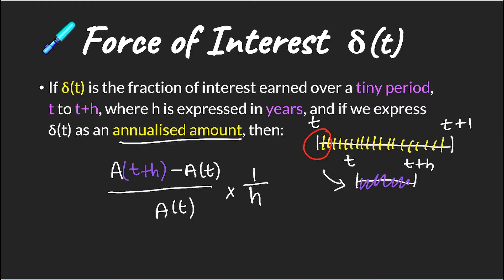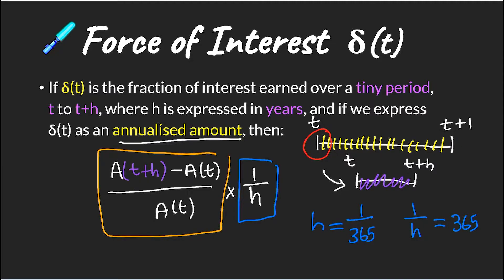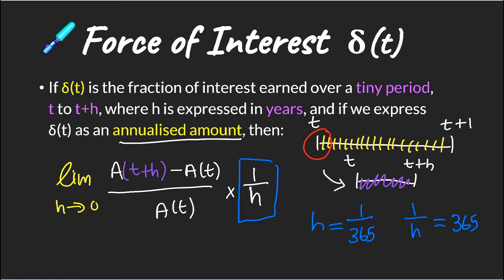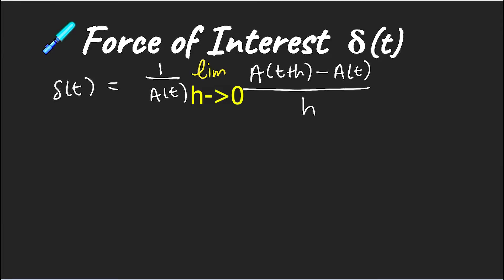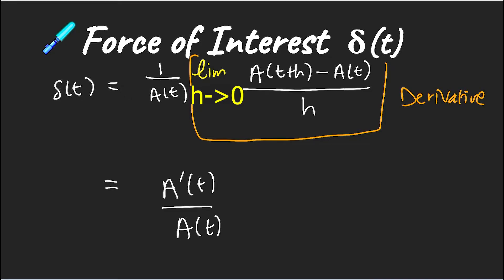We want to annualize this amount by multiplying it by one over h. As a quick example, if we chose our time period to be one day in a 365-day year, then one over h becomes 365. So if this is the interest we're earning over one day, multiplying it by 365 gives the interest earned over the entire year. We then take the limit as h tends to zero, making our period very very small, and we know that this is our definition of the force of interest. By rewriting this differently we see that this is actually a derivative, and it collapses very nicely into a simple formula.